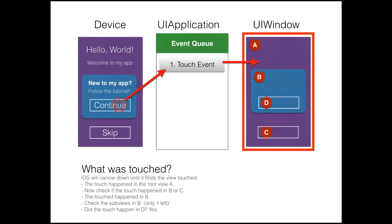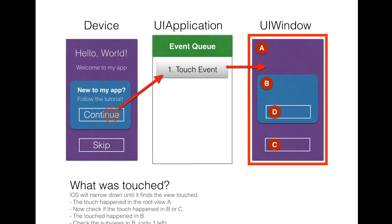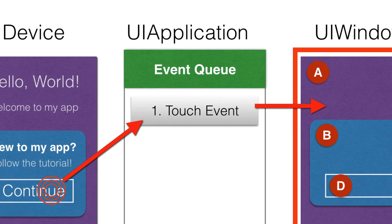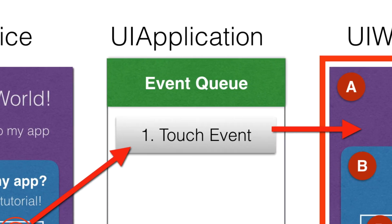In that blue UIView it checks all the subviews within B to find which item was clicked, and it finally finds that D was clicked. Once it finds that D was clicked, it checks whether that button can handle the touch event. In this case it can — the developer probably coded something for the Continue button — so it handles that user event. Apple calls this the responder: the button becomes the responder.